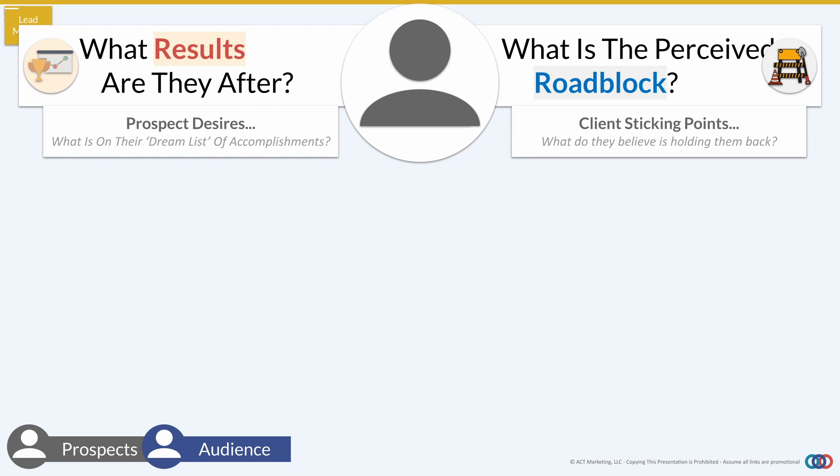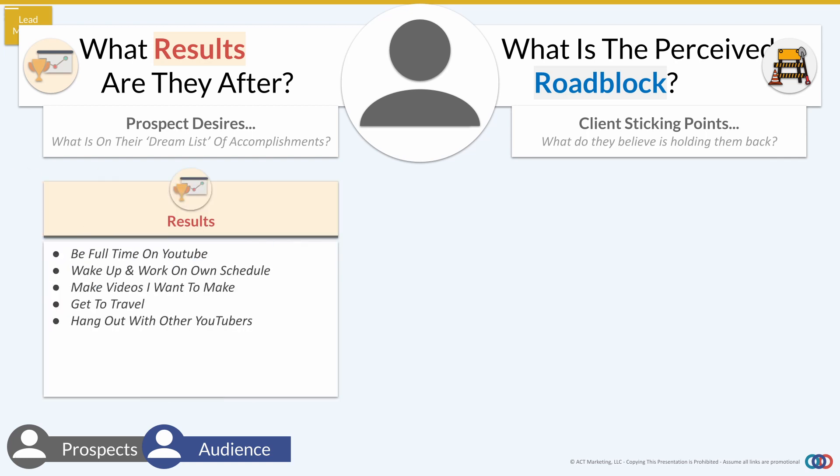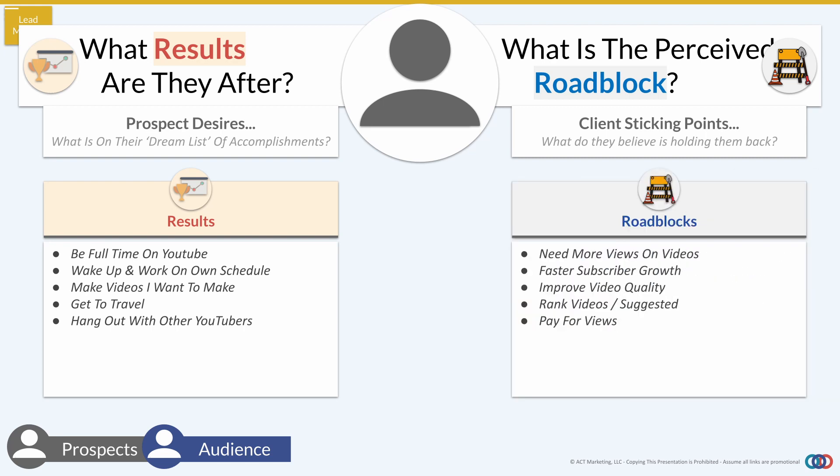As a quick example, let's say we're making a lead magnet for someone trying to grow a YouTube channel. On the results side, they want to be full-time and have life freedom. On the roadblock side, they're not happy with their growth, the number of views — maybe they think they need better video quality or better ranking. You can go through this process in 10 to 15 minutes, then look at that roadblock side and find something you can help them start or solve in less than 24 hours.